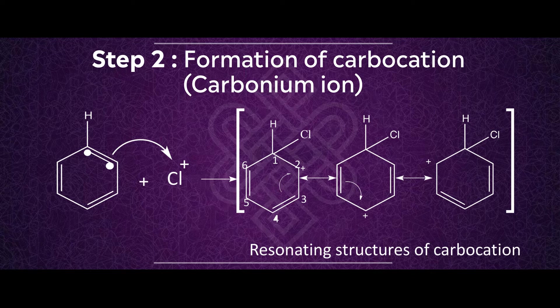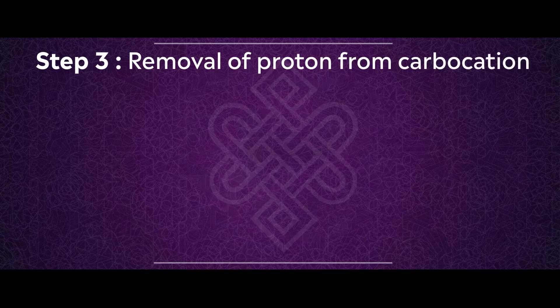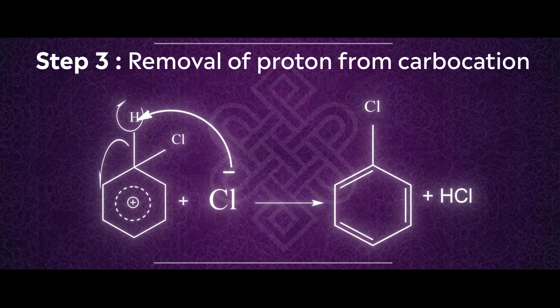Step three: removal of a proton from the benzene ring. The base formed during generation of the electrophile — which is Cl⁻ — attacks the proton present in the benzene ring and extracts it. The bond breaks and the electrons move towards the benzene ring, leading to formation of chlorobenzene and restoration of aromaticity, with production of hydrochloric acid.